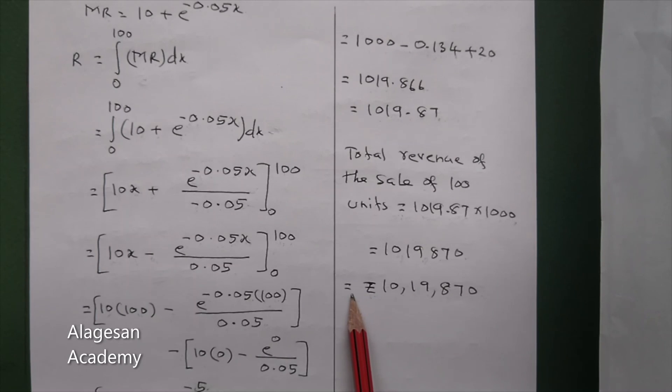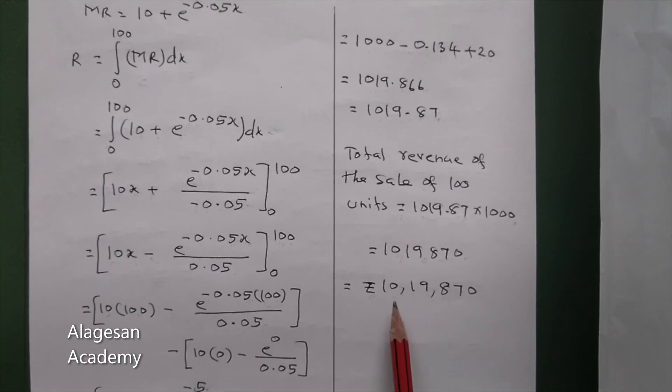So the final answer is 1019.87 in thousands of rupees. Can you understand this question? Direct integration from 0 to 100.